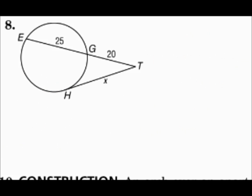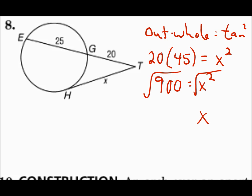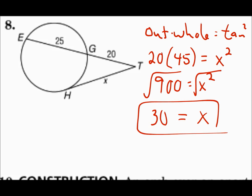Moving to question 8, we have a secant and a tangent. For the secant: outside times the whole thing. For the tangent: square the tangent. The secant has outside 20 and whole thing 20 + 25 = 45. The tangent is X, so we do X². Setting them equal: 20 × 45 = 900 = X². Square root both sides, and X = 30. Remember: secant is outside times the whole thing, and the tangent gets squared.